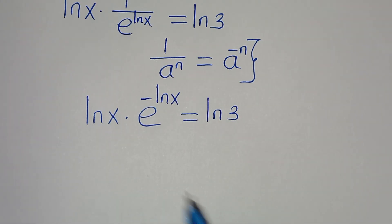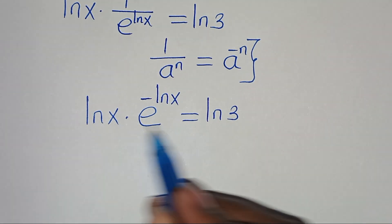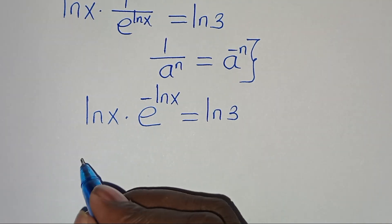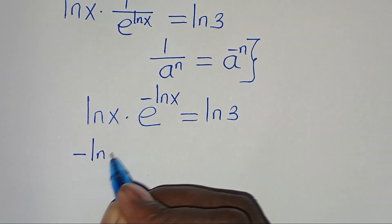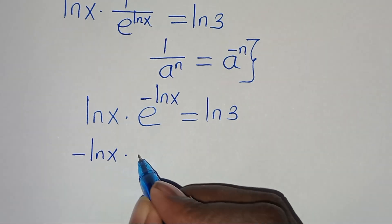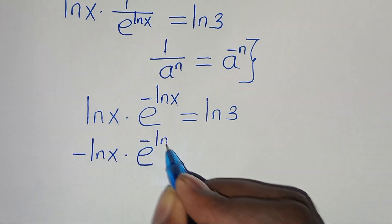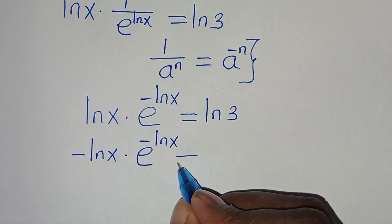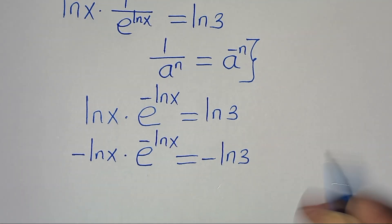Now we have a minus sign here, so let's multiply both sides by minus 1, so we have minus ln(x) multiplied by e to the power of minus ln(x), equal to minus ln(3).